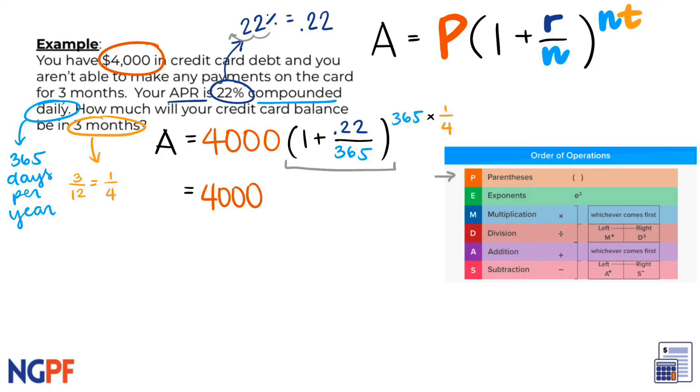Within the parentheses, we have addition and division. According to order of operations, division takes first priority, so we can divide 0.22 by 365, which gives us 0.00060274. I will wait until the very end to round my solution to the nearest whole dollar.